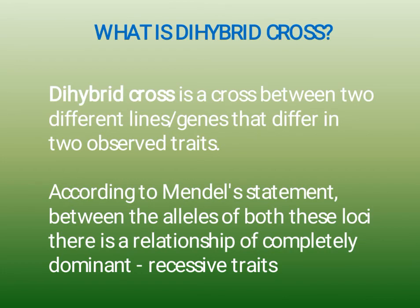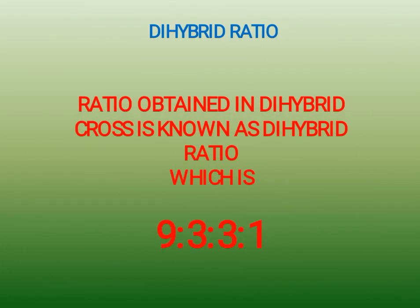For example, I will give the example of yellow round and green wrinkled seed. In the next slide, I will show you the example. Whatever ratio we obtain in dihybrid cross is called the dihybrid ratio, and that ratio is always 9:3:3:1. So this ratio is called the dihybrid ratio.